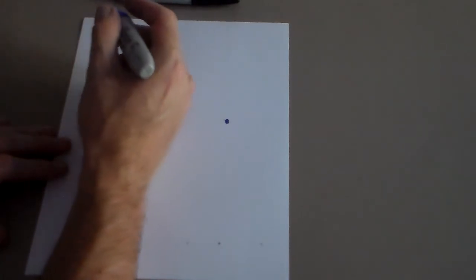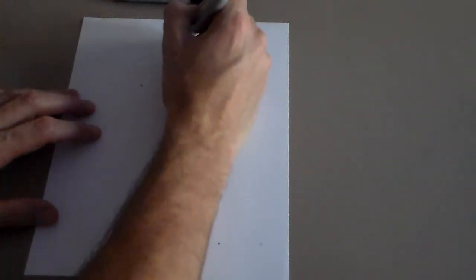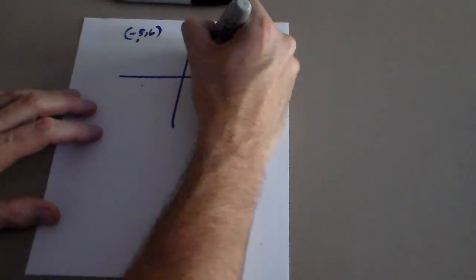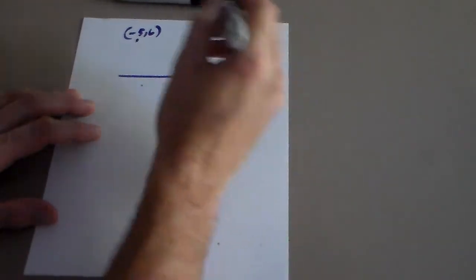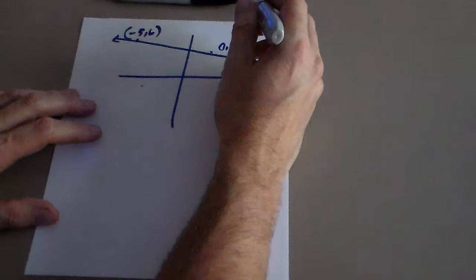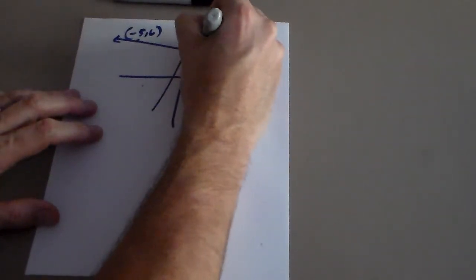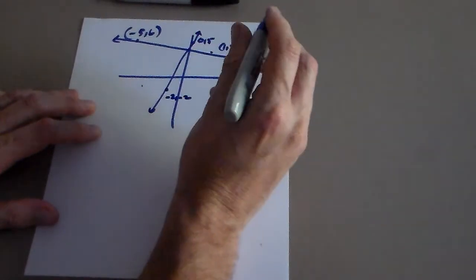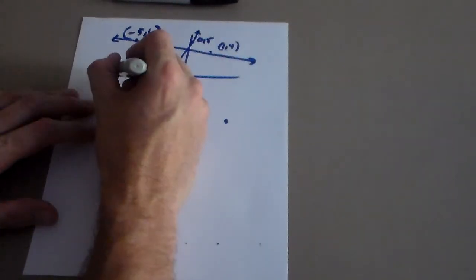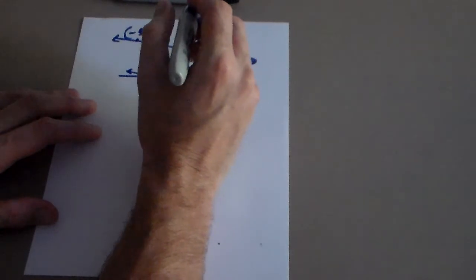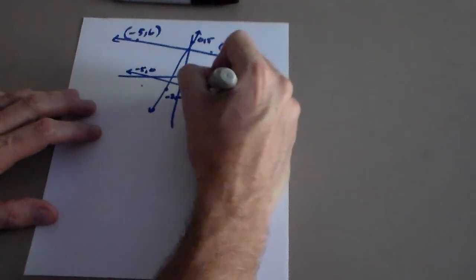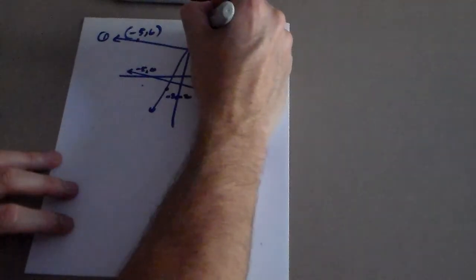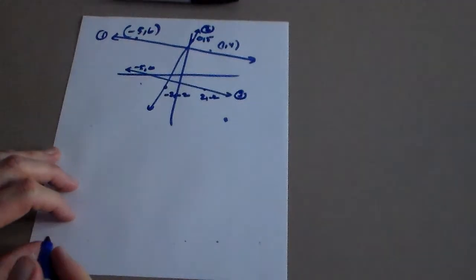I'm going to give you a couple of lines. Line 1 goes through (-5, 6) and (1, 4). Line 2 goes through (0, 5) and (-2, -2). Line 3 goes through (-5, 0) and (2, -2). I'm going to call them line 1, line 2, and line 3 so it's easier to refer to them.